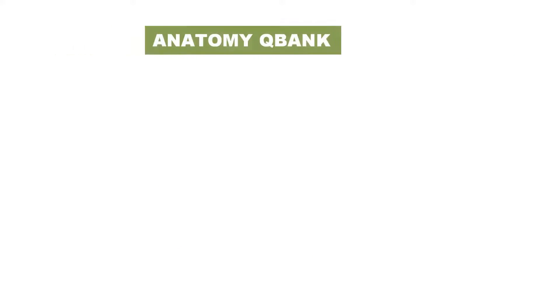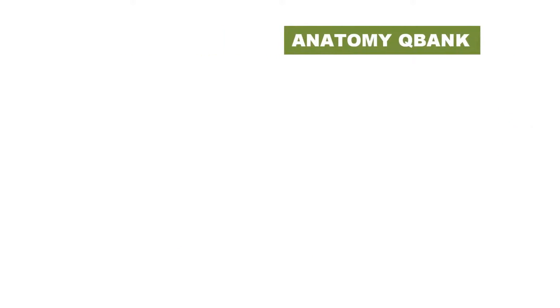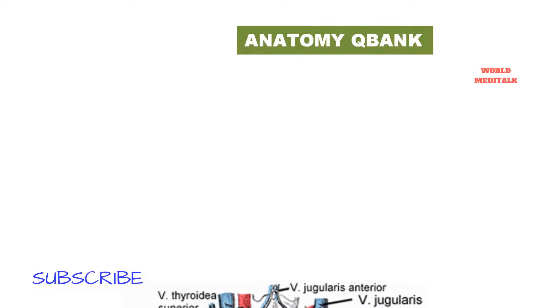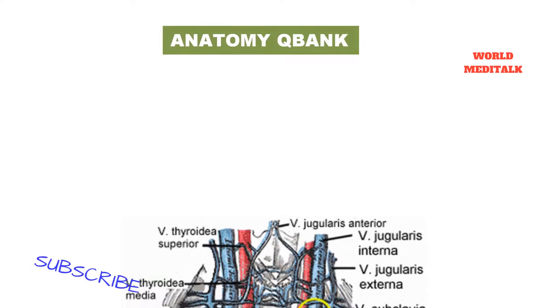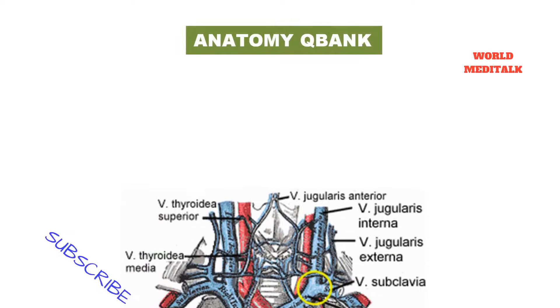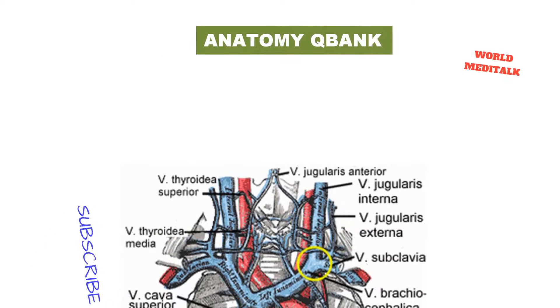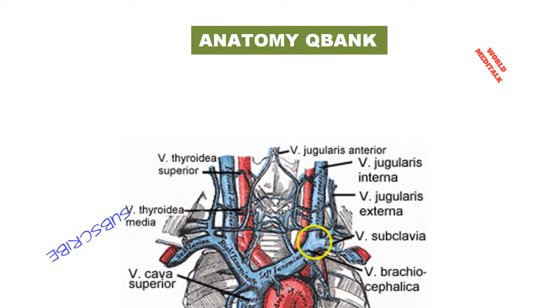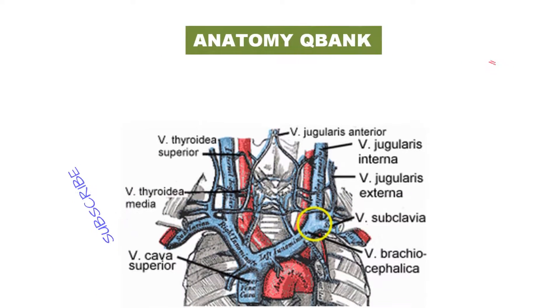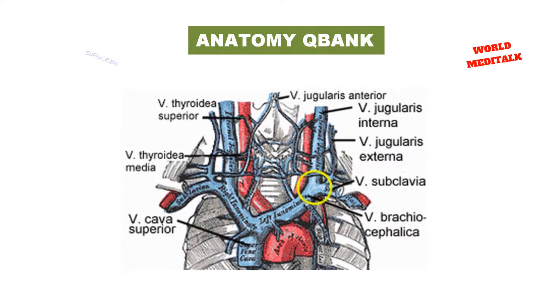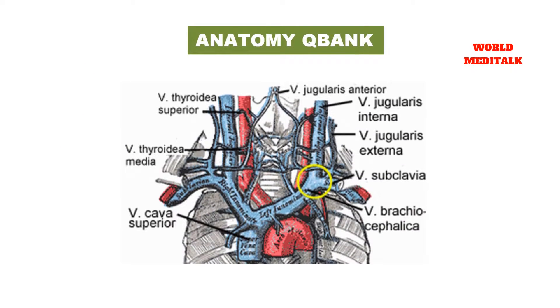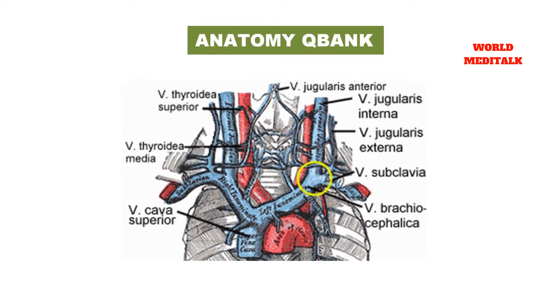Posterior to the vein, there are the transverse processes of the cervical vertebrae, the phrenic nerve as it descends on the scalenus anterior muscle, and the first part of the subclavian artery. On the left side, it is also related to the thoracic duct.